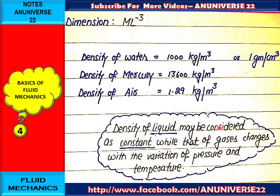We have some important values to remember when studying fluid mechanics. The density of water is 1000 kg per meter cube, or 1 gram per centimeter cube. Density of mercury is 13,600 kg per meter cube, and density of air is 1.29 kg per meter cube. The density of a liquid may be considered constant, while that of gas changes with variation of pressure and temperature.